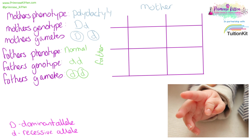Now we've drawn our Punnett square, with the mother and her gametes at the top and the father and his gametes down the side. We fill it in by taking each allele and filling down or across. The mother donates the dominant allele twice and the recessive allele twice, and the father gives recessive alleles to all four boxes. This gives us the genotypes of the four potential children.